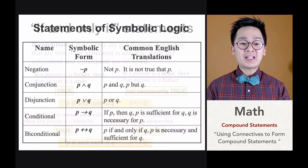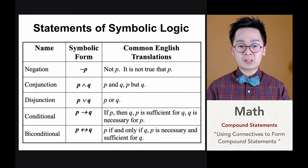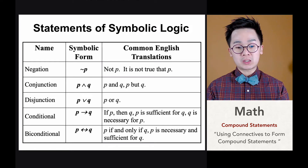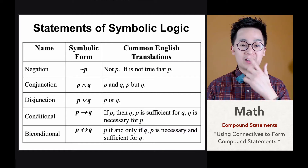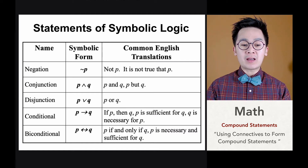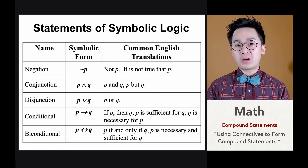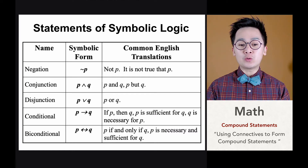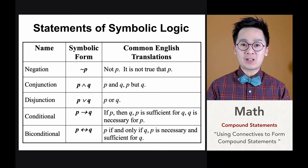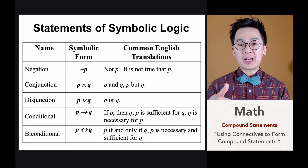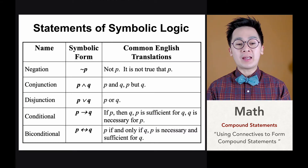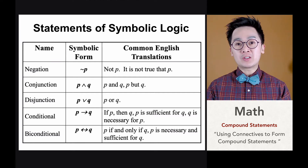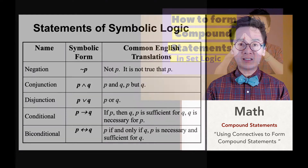Here are the connectives covered in this lesson: conjunction (AND), disjunction (OR), conditional (IF-THEN), and biconditional (IF AND ONLY IF) statements. Some of these statements can also be negated using the negation symbol. In symbolic logic we can use two or more basic statements along with two or more connectives to create more complex compound statements.